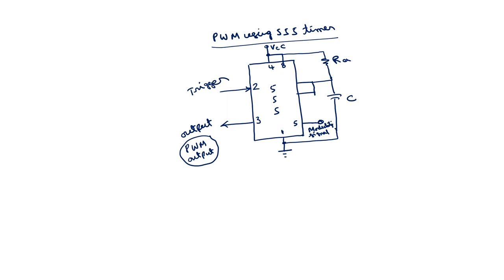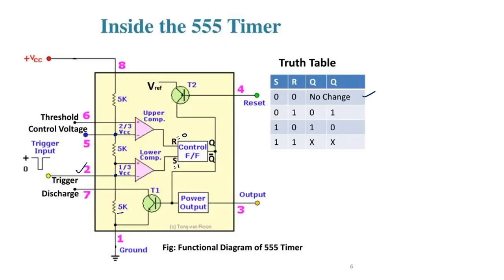The operation is as discussed in the earlier lecture. Here this voltage is two-thirds VCC. If I want to change this time interval, we can apply a control signal. This pulse width — initially in standby mode the output is zero. If I apply a negative going trigger at pin 2, the output becomes high. How long it will remain high is decided by the two-thirds VCC and one-third VCC thresholds. To control this pulse width using the control signal, I apply the modulating signal at pin number 5, which is the control voltage pin.